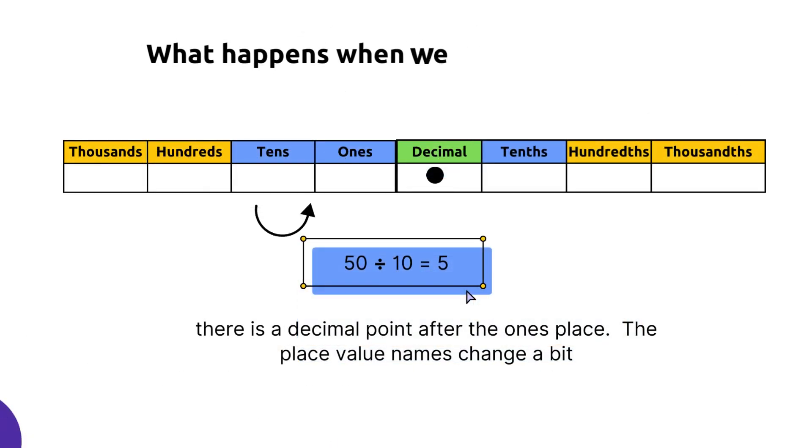So what happens when you have a decimal? Well when you have a decimal, there's a decimal point after the ones place and after the decimal point we have new place values that are tenths, hundredths, and thousandths. Notice the difference in the ending of the word?